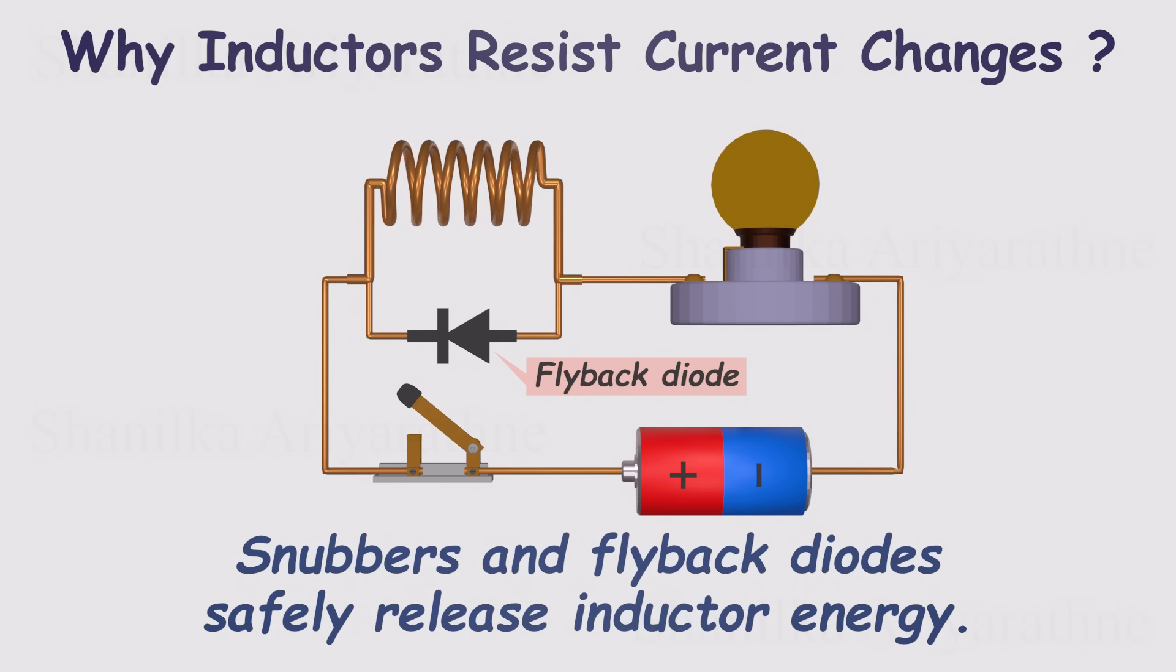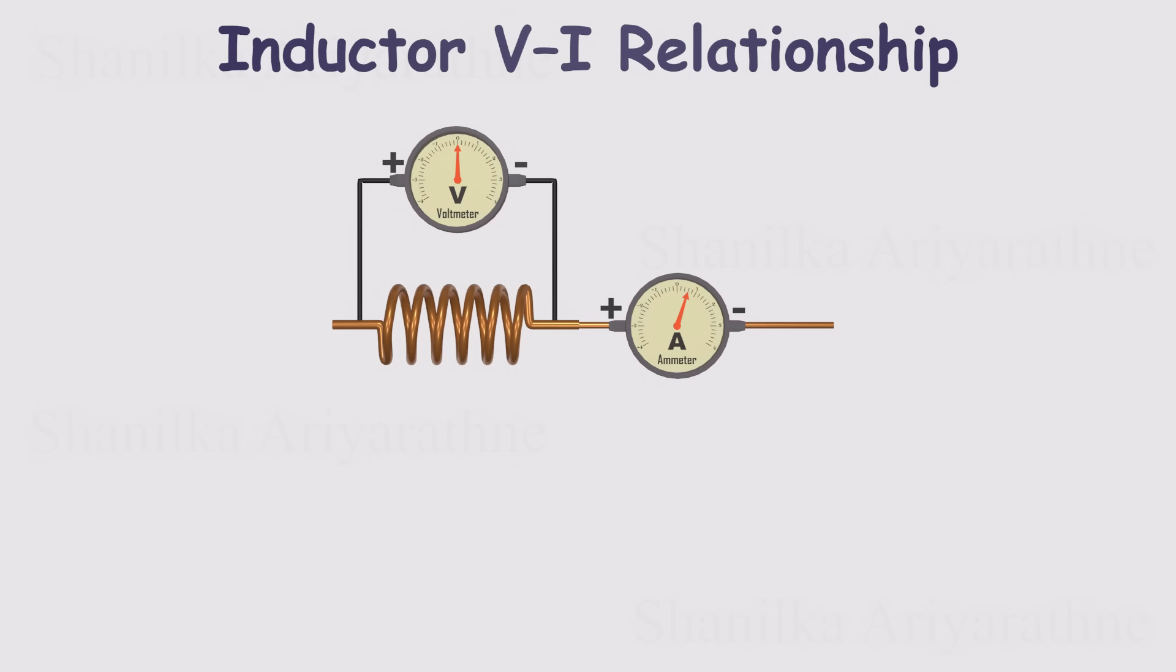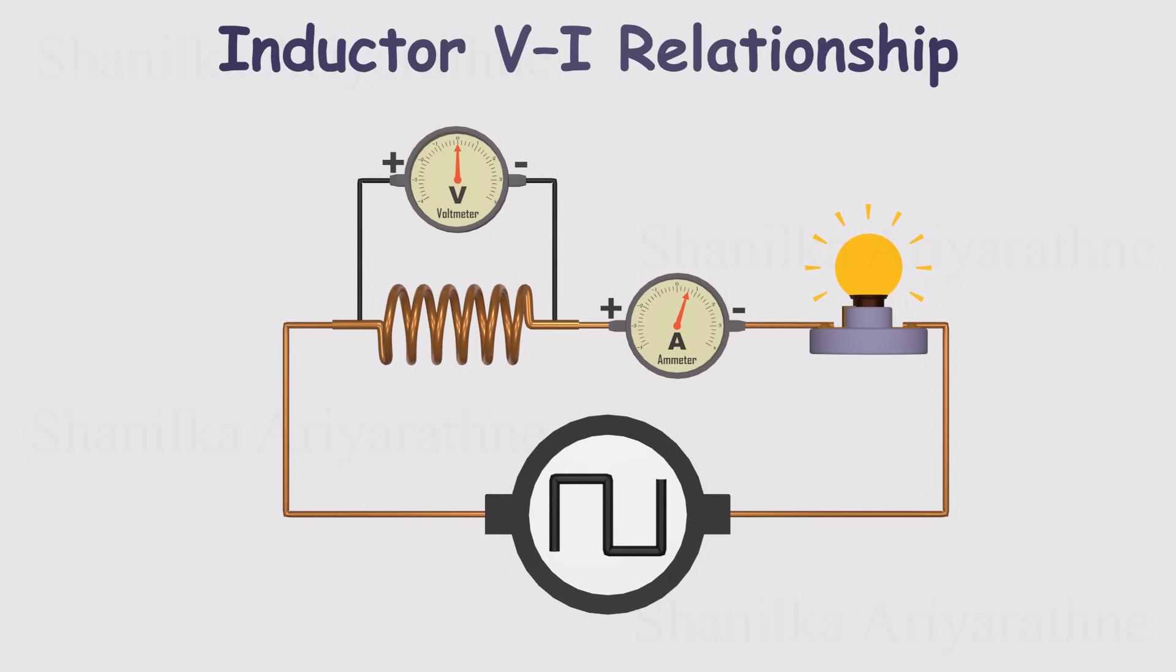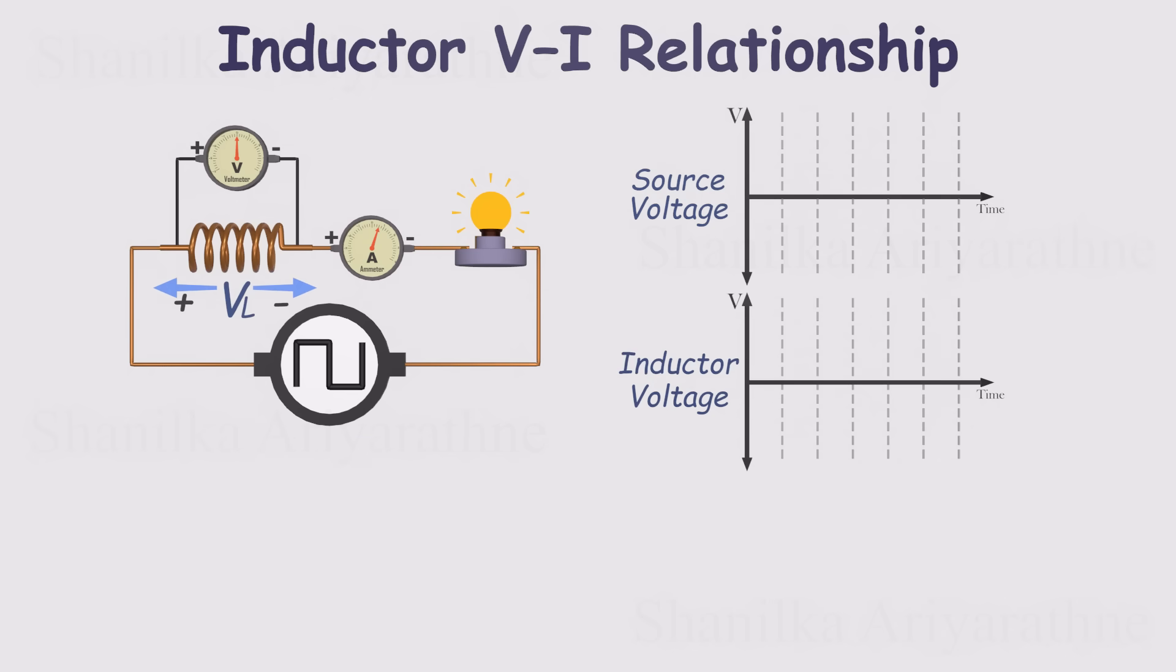Now, let's run an experiment to discover how voltage and current relate in an inductor. First, I connect a voltmeter across the inductor to measure its voltage. Then, I add an ammeter in series to measure the current. I also include a small light bulb in series. It limits the current like a resistor, and its brightness gives a nice visual cue for flow. Finally, I hook the circuit to a signal generator set to a square wave. Now, let's plot three things. The supply voltage, the voltage across the inductor, and the current through it.